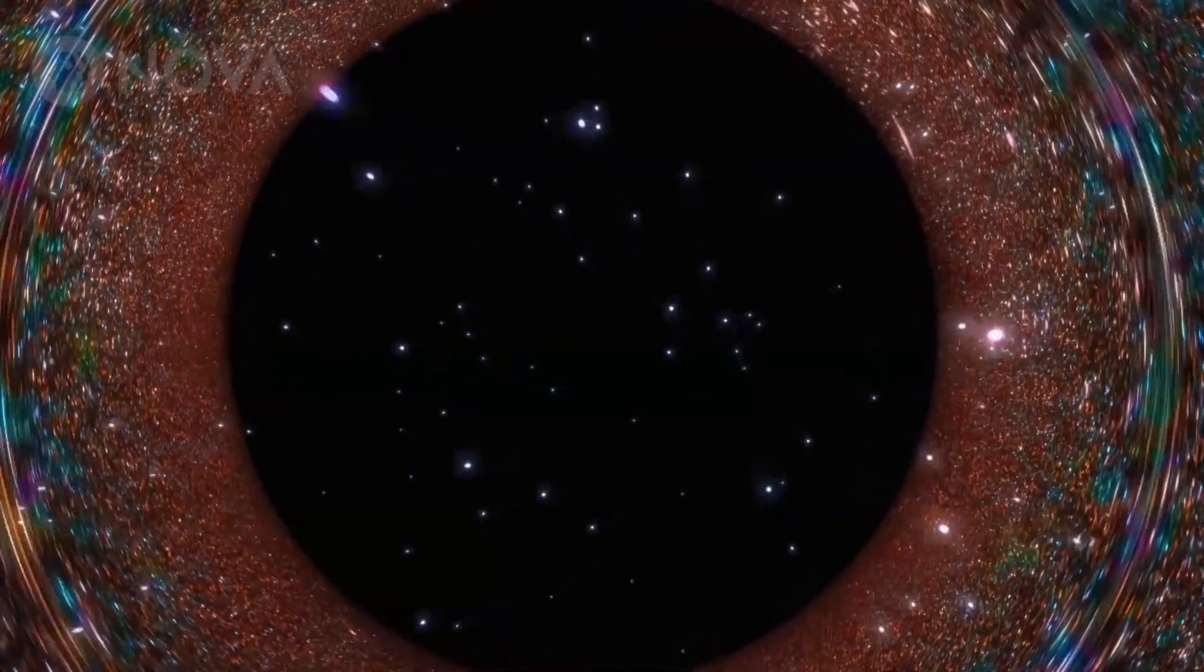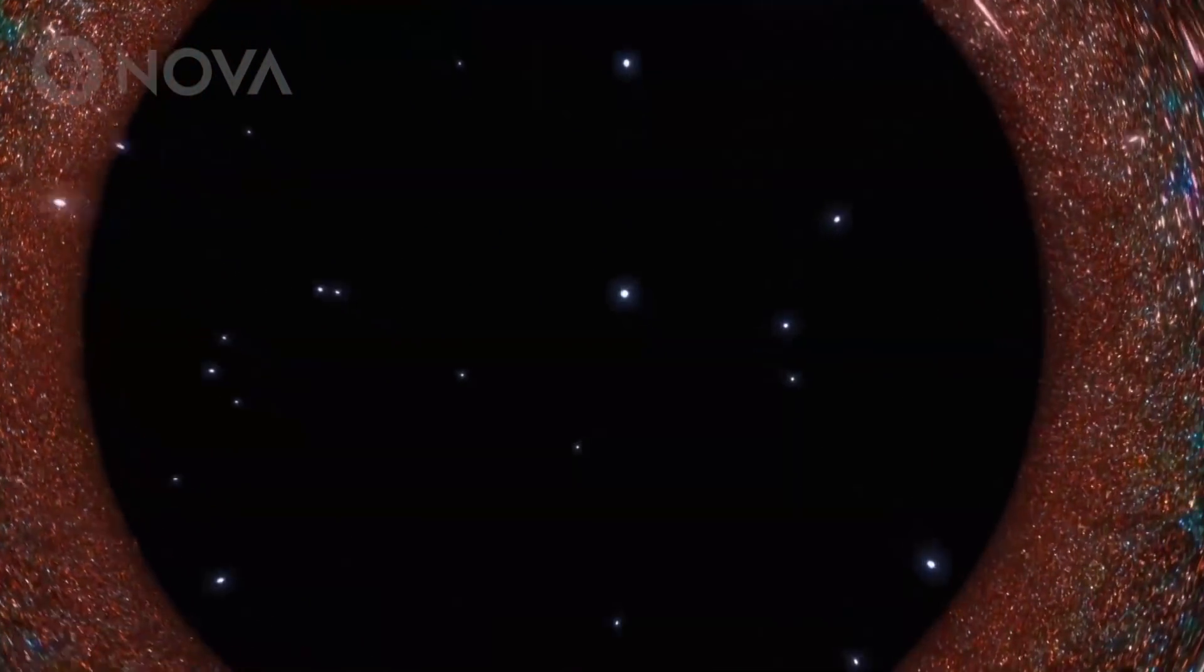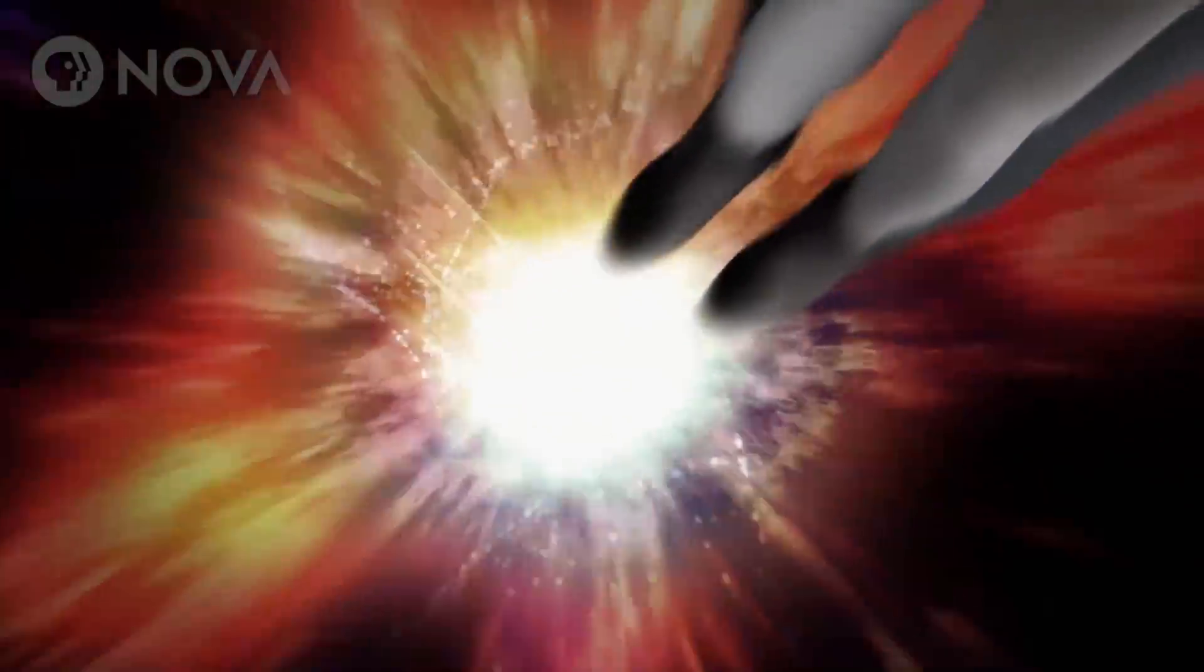Even the most conventional theories of black holes predict some crazy stuff inside. According to Einstein's theory of general relativity, if you fall into a black hole, you'll see bright lights all around you.